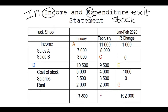Now let's look at the income. We've got Sales A: 7,000 rand, and Sales B: 3,000 rand. They want to know the total income from our sales in January. So we say 7,000 plus 3,000, and that gives us 10,000 rand.